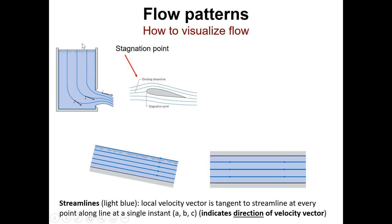Here's a tank with an orifice in the side — a hole — and water flows out. The water is going down, accelerating as it approaches the exit point, and the streamlines are changing direction. Remember that velocity has two components: magnitude and direction. When either changes, there's been an acceleration. So as streamlines change direction and get closer together, there is an acceleration of the fluid, and the water goes out as a fluid jet.